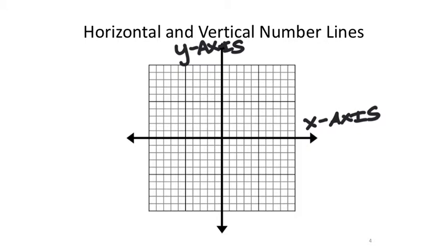This is important because when we look at an ordered pair, the first value is the x value — it coordinates with the x-axis — and the second one is known as the y value, which corresponds with the y-axis.